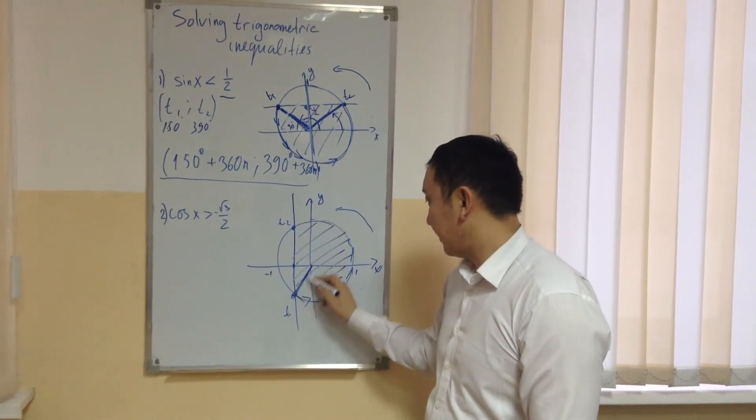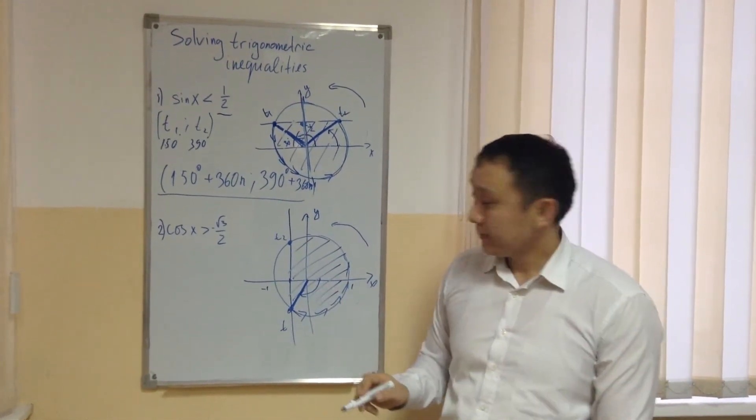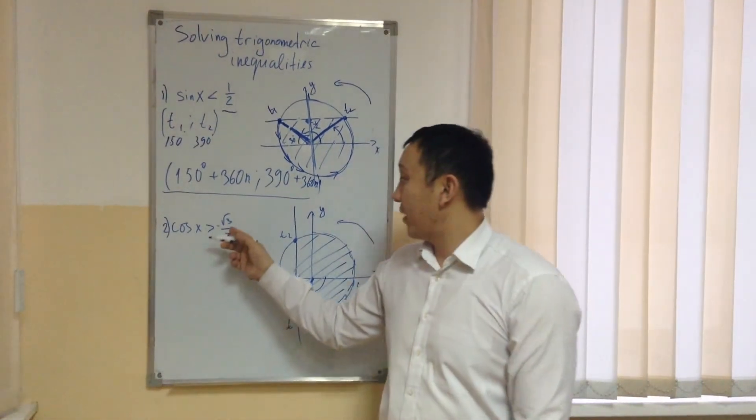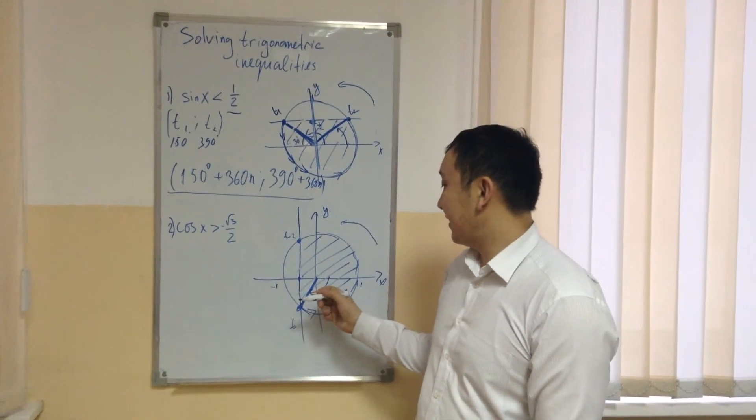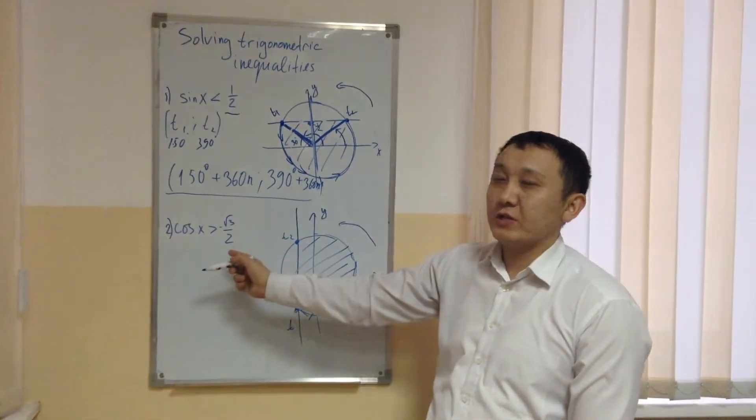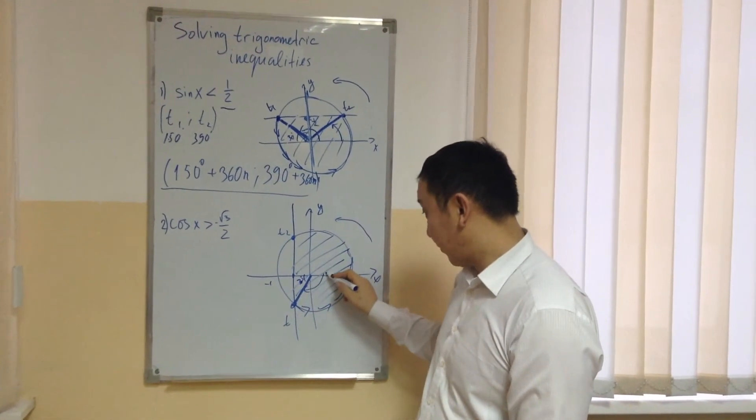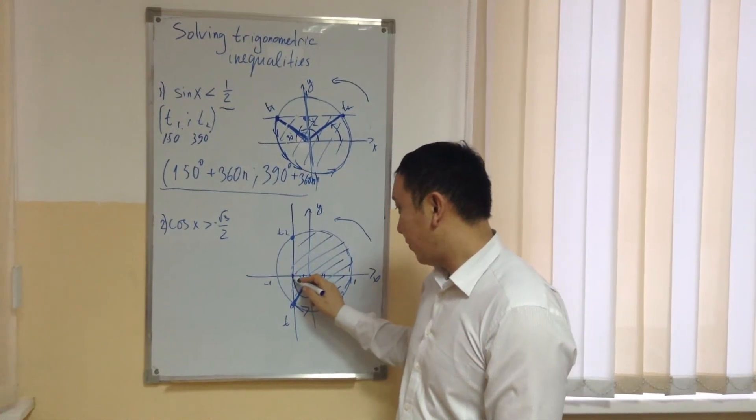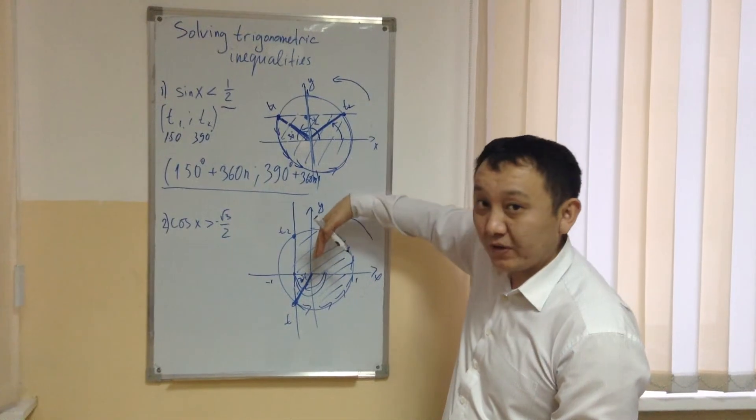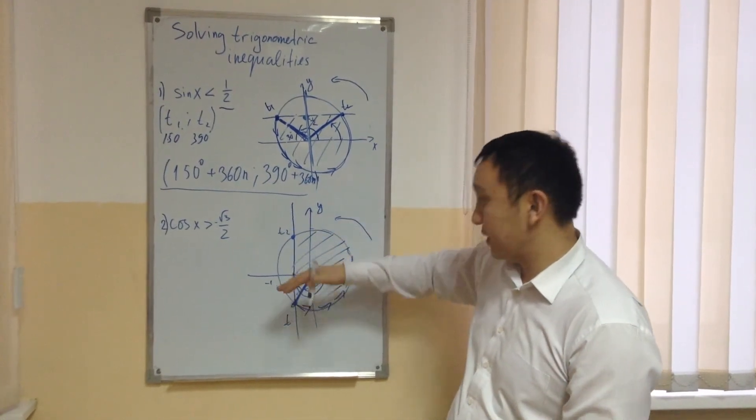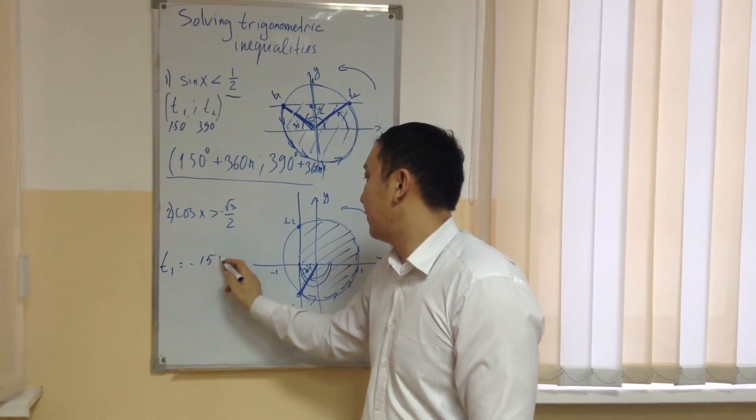So in order to find this angle, I have to find the angle to this side. Let's remember arc cosine of square root of 3 over 2. Sorry, it's not 60 degrees, it is 30 degrees again. So this one is 30 degrees. So I have to again move 180 back, 150. But because I am moving according to clockwise, then my first angle, t1, is minus 150 degrees.